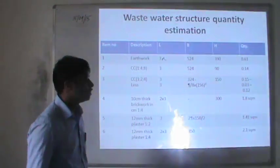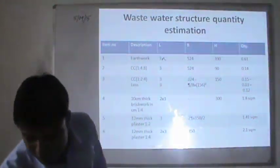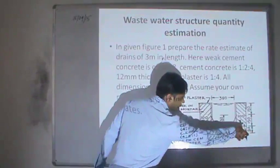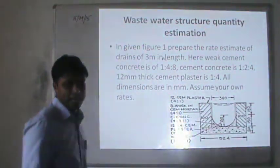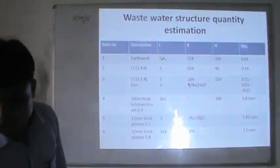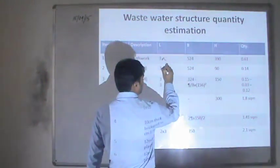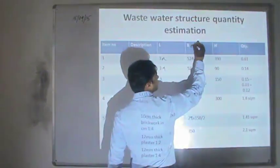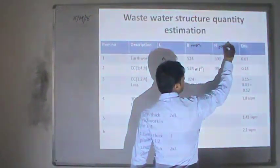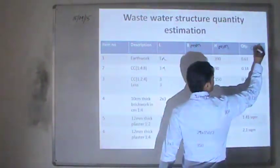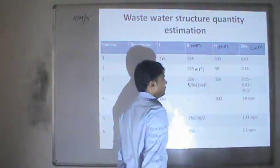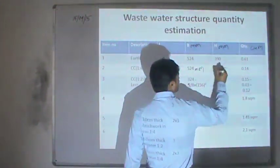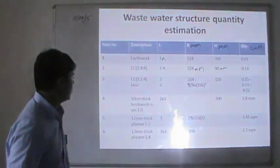To find the quantity of plain cement concrete (PCC) used, the width is 90 mm. With the length of 3 meters and width of 90 mm, we calculate the volume in cubic meters.